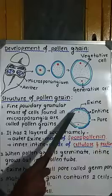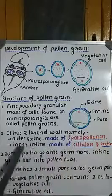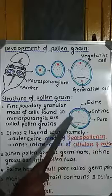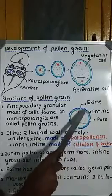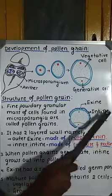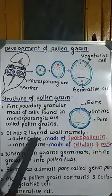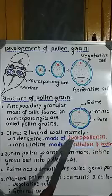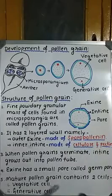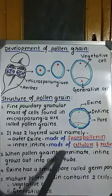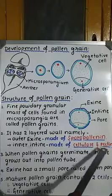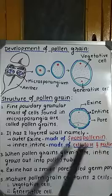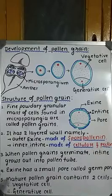The pollen grain has a two-layered wall: the outer layer is called the exine and the inner layer is called the intine. The blue one is exine and the green one is intine. The outer exine is made up of a hard organic matter called sporopollenin, and the inner intine is made up of cellulose and pectin.